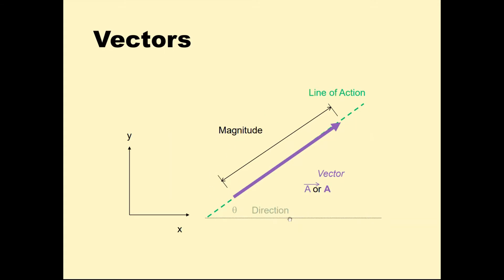This is an example of a vector. Its total length represents the magnitude. The head or the tip of the arrow indicates the sense of direction.